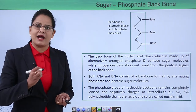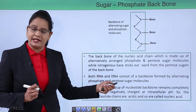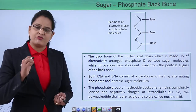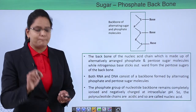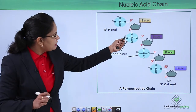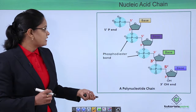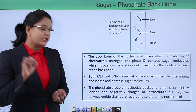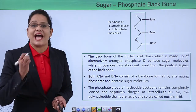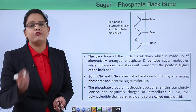Both RNA and DNA have the sugar-phosphate backbone, and the phosphate group always remains completely ionized. As you can see in the figure, the phosphate is negatively charged and completely ionized. Because of this, the phosphate group is acidic in nature, and therefore a polynucleotide is acidic — which is why it is known as a nucleic acid.